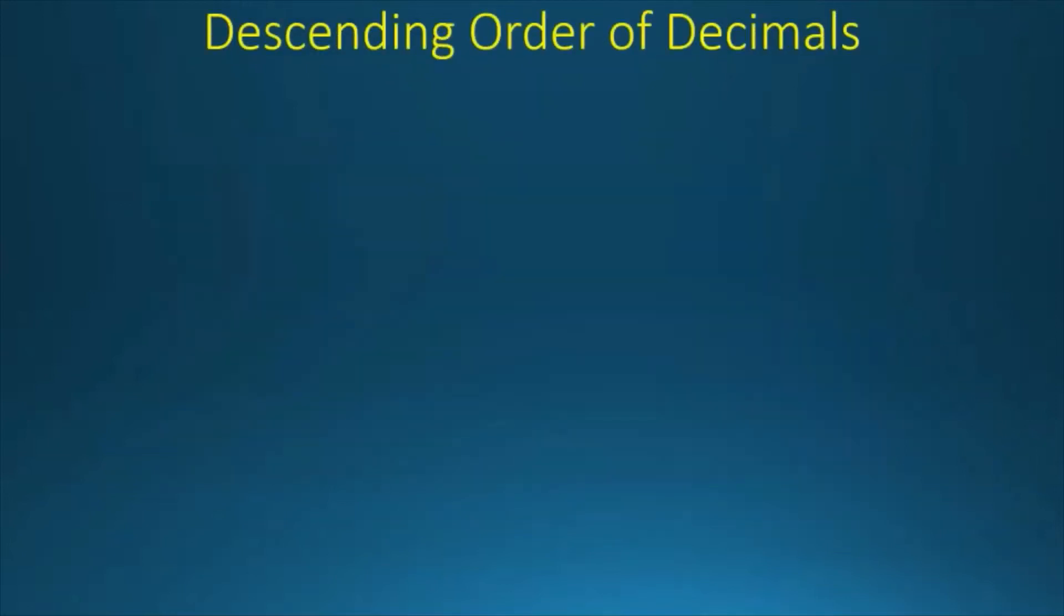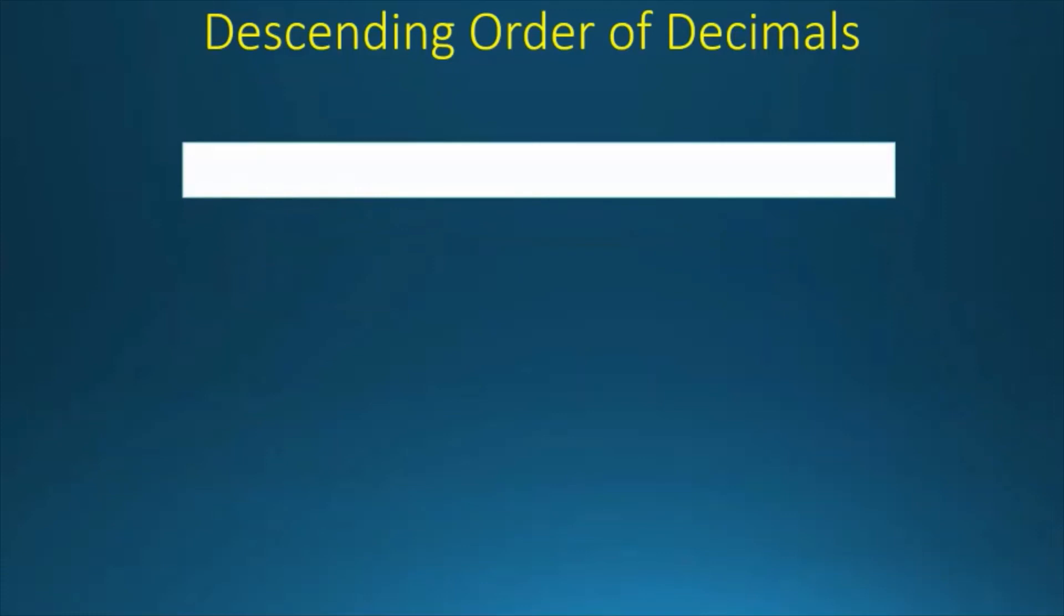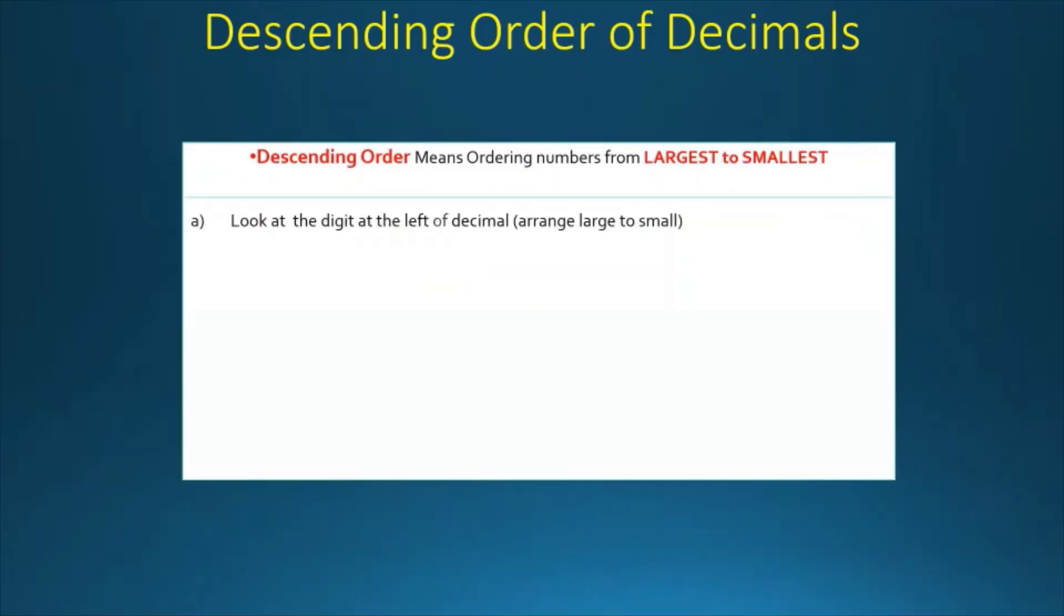Now, let's learn about the descending order of decimals. Descending order and ascending order are totally opposite. So descending order will be ordering numbers from the largest to smallest. As you already know the steps of ascending order of decimals, we will not discuss more about this. Only the difference is that in ascending order, it will be small to large. Descending order will be large to small.